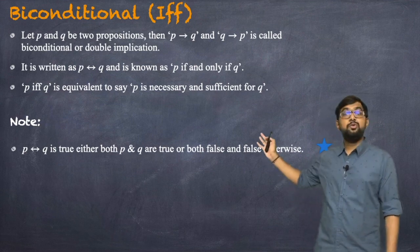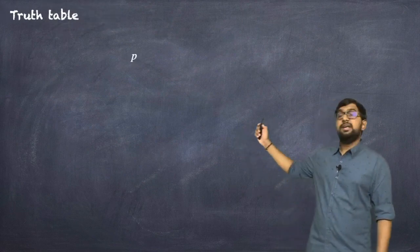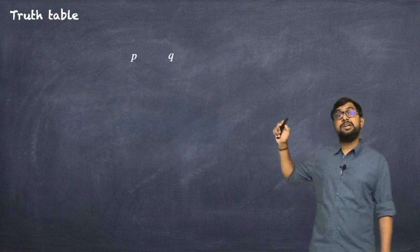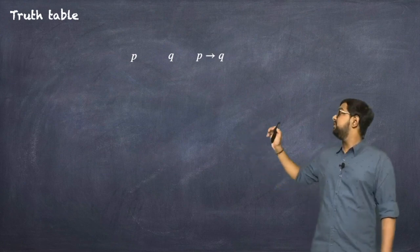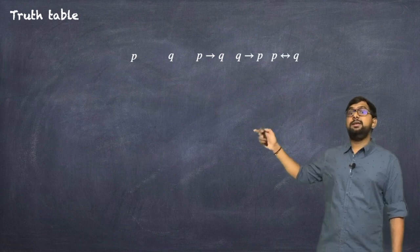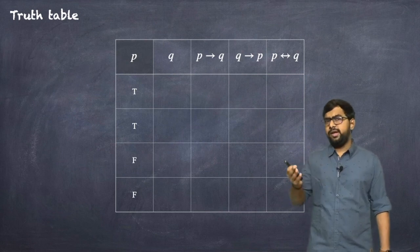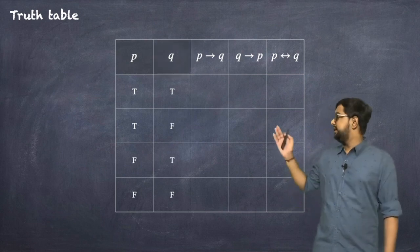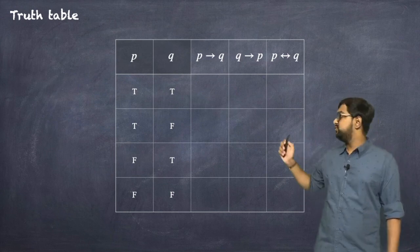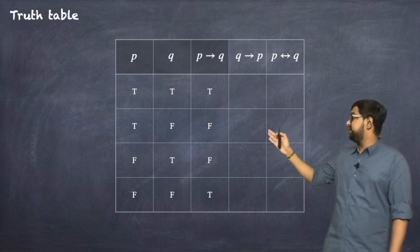To construct the truth table for P ↔ Q, we need columns for P, Q, P→Q, Q→P, and then P↔Q. There will be four possibilities: T T, T F, F T, and F F. For P→Q: when both are true it is T; when P is T and Q is F the conclusion part is false, so it is F.